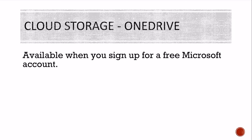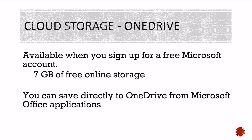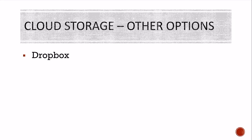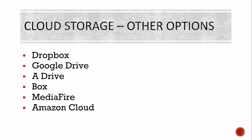OneDrive is available when you sign up for a free Microsoft Office account. It gives you seven gigabytes of free online storage — you can store a lot there, though once you start adding video it cuts into your storage quickly. You can save directly to OneDrive from Microsoft Office applications. Other options you've probably heard of include Dropbox, Google Drive, ADrive, Box, Mediafire, and Amazon Cloud.